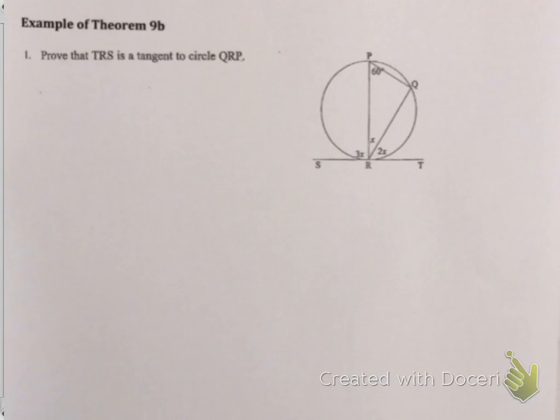So let's have a look at an example. Now this one is a bit blurry but you should have it in front of you. This question says prove that TRS is a tangent. Now the easiest way to do that is windsurfer angles. So I've gone and highlighted my windsurfer. My tangent is TR. And it forms an angle of 2x.